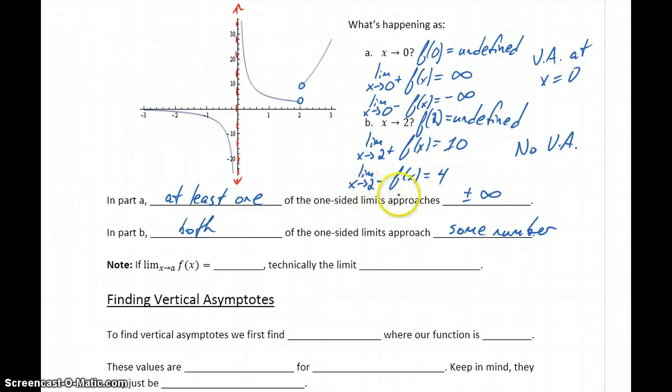If one of our one-sided limits approaches either negative infinity or positive infinity, we know that we have an asymptote occurring. If both one-sided limits approach some number, then there's no vertical asymptote. All we have is just a break in the graph at that point.